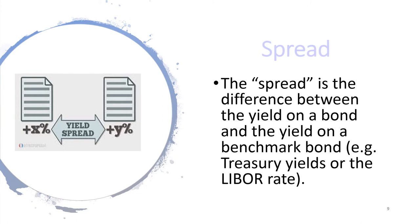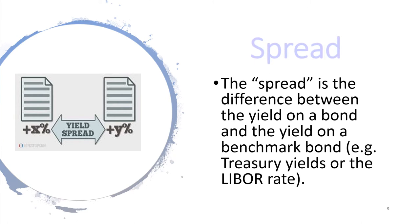The spread is the difference between the yield on a bond and the yield on a benchmark bond. The benchmark yield can be treasury yields or the London Interbank Offer Rate. A yield spread is the difference between yields on differing debt instruments of varying maturities, credit ratings, issuer, or risk level, calculated by deducting the yield of one instrument from the other. This difference is most often expressed in basis points or percentage points — one percentage point spread is equal to 100 basis points. Investors use the spread as an indication of the relative pricing or valuation of a bond. Generally, the higher the risk of a bond, the higher its yield spread. Yield spread can expand or contract, which signals changes in the underlying economy or risk level.